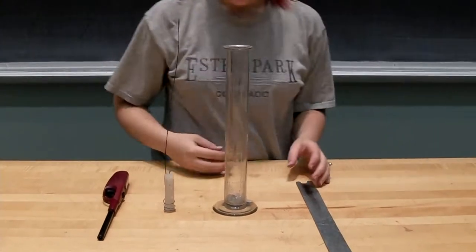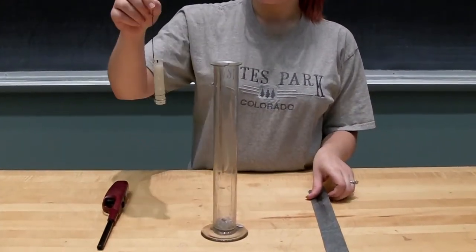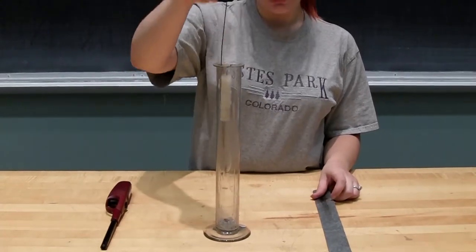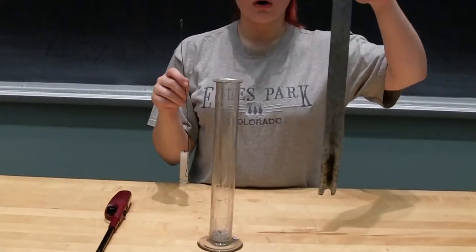This is the candle in the chimney, which consists of a graduated cylinder, a candle on a rod so we can put it into our cylinder, plus a piece of metal that is used for our chimney.